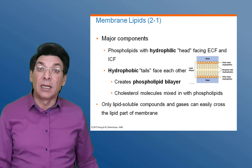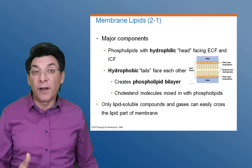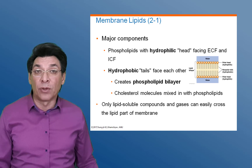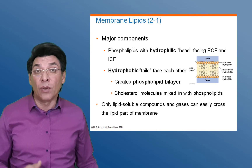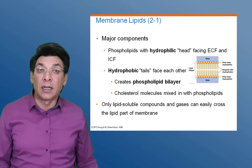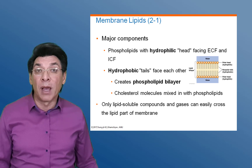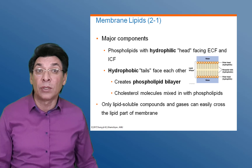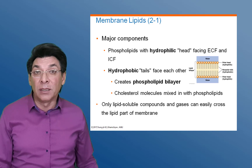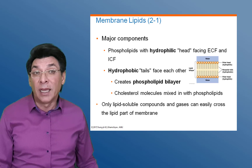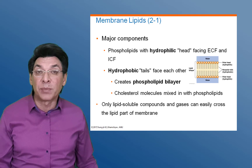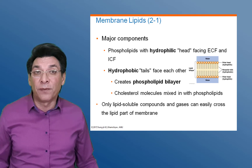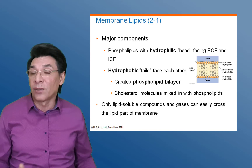Glycolipids — usually about 5% of the lipid content. The prefix 'glyco' means glucose or sugar, so a glycolipid is a small amount of sugar attached to a large amount of lipid. Glycolipids are found on the external surface of the plasma membrane and act as cell markers, helping to identify the cell as 'self' to the defense cells of the body.